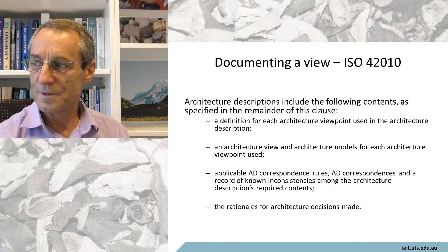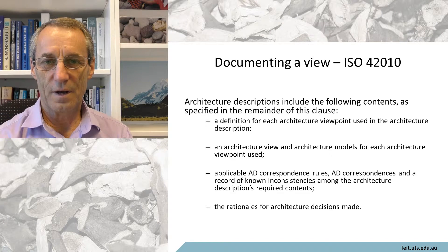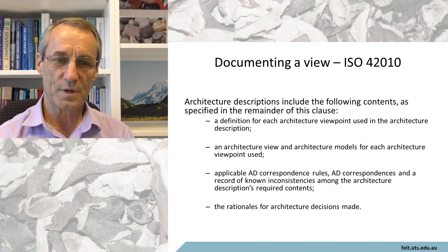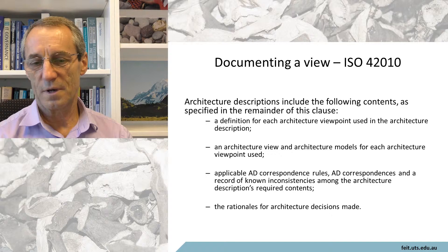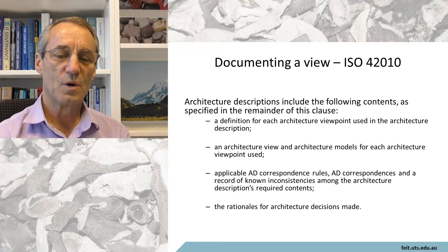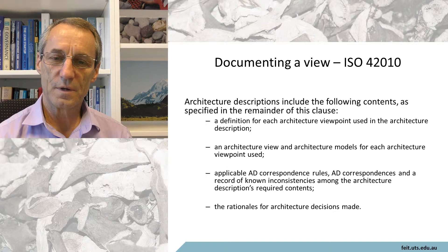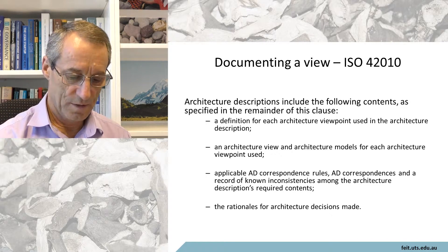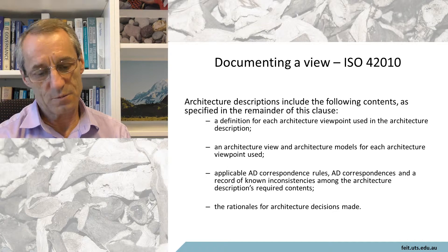I wasn't sure why inconsistencies between different views would require comment, but I can imagine that in a large project with a large number of architecture views developed by different parties in different countries with different release cycles, somebody might put out an architecture view knowing that some parts of it are mismatched with an existing document or a previous version. The rationales for the architecture descriptions are very much a part of the architecture documentation, and we'll get to more on that later.